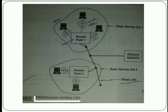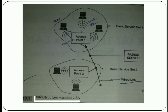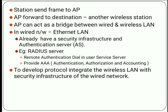In infrastructure wireless LAN, communication occurs as follows: a station sends a frame to an access point, then the access point forwards it to the destination, which can be any other station in the same set. When one wireless station sends a frame, it is captured by the AP and AP forwards it to another wireless station. The AP can act as a bridge between the wired and wireless LAN, because the access points are connected with a wired LAN while also connecting the various wireless stations.